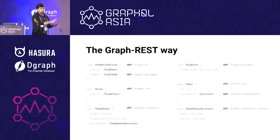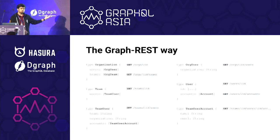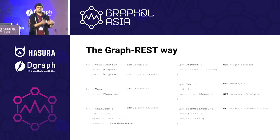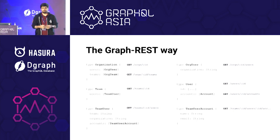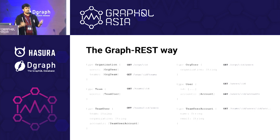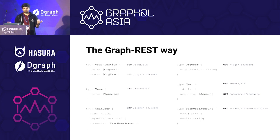No need to look at the schema in detail — just pay attention to the type names. We have OrgUser, OrgTeam, TeamUser, which kind of makes sense: a TeamUser might have a different property from an existing user, an OrgUser might have some more properties. And this is the kind of schema I initially ended up building, and I think most of us do start off this way.